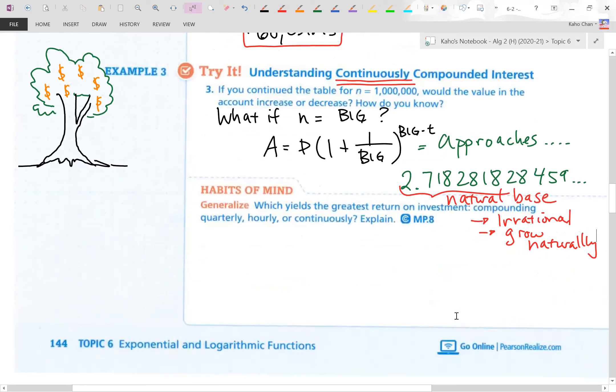This is a number that's famous in math, physics, and science. This is called the natural base. This is how things grow in our universe. It's definitely still irrational, meaning it's a number that doesn't have a pattern. But this is a universal growth number. This is how things grow naturally. Which yields the greatest return on investment? Compounding quarterly, hourly, continuously? I'm just going to tell you the word continuously is the greatest return. I'm just going to tell you the greatest return on investment. You don't grow faster than anything else naturally. We use a letter for this special base called 2.718. It's the letter E. You know like how pi is famous, like the Greek letter pi. Here E is known as the natural base.